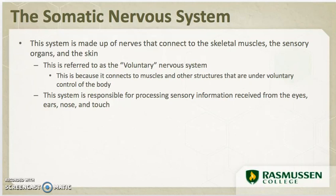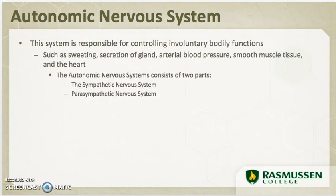The somatic nervous system controls voluntary actions — when you decide to take a step and your foot actually moves, you have control over that. Whereas your autonomic nervous system is your involuntary system. It handles things you cannot control, such as sweating, glands secreting, your heart pumping, your stomach pushing food through and contracting and relaxing — all the things your body does that we have no control over.